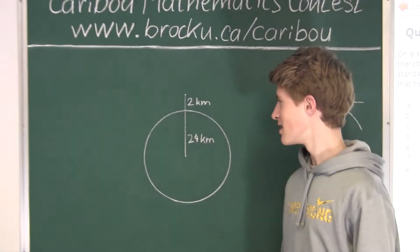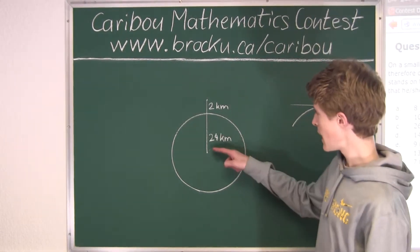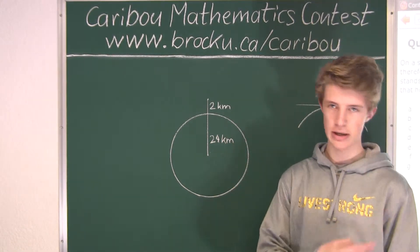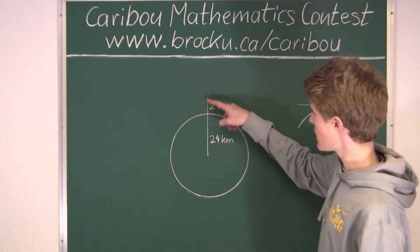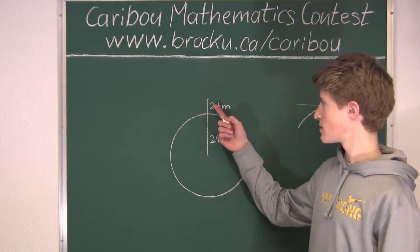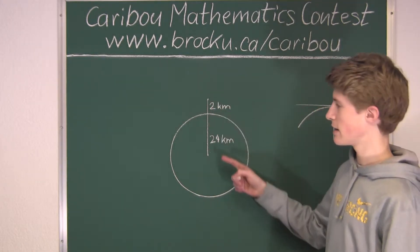Alright, so here this circle is representing the small planet, and here this line, which is the radius, is 24 kilometers, which is already given in the question. And this extra line, which is going in the same direction, represents the tower, which we know is 2 kilometers, but this is not in scale.